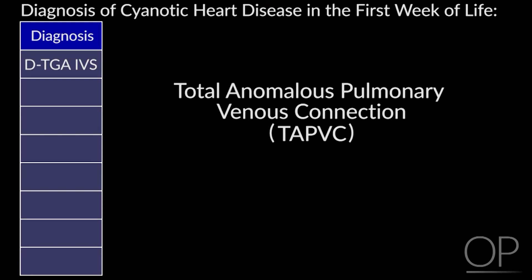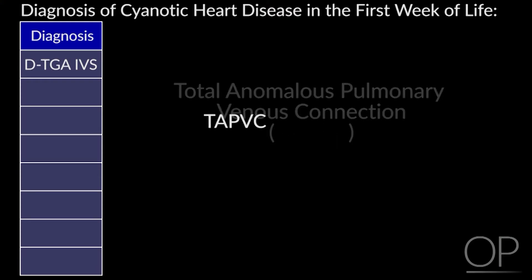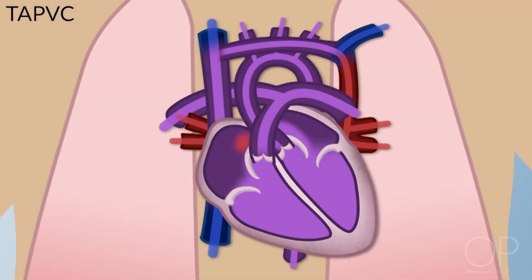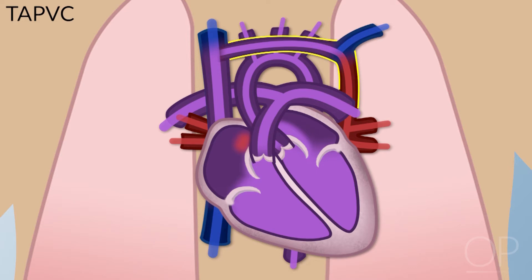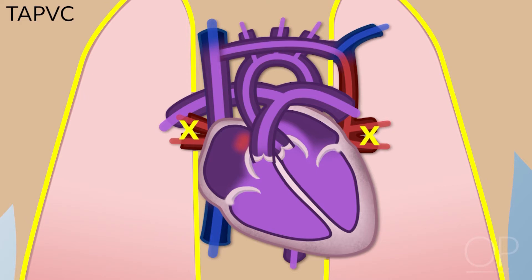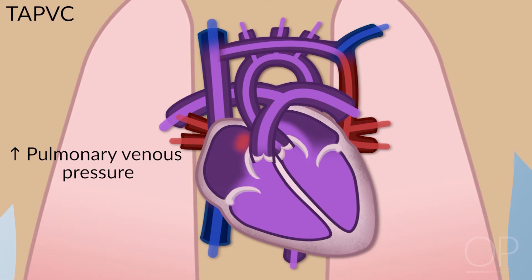The second is total anomalous pulmonary venous connection. These are kids whose pulmonary veins never get back to the left atrium, so they do okay in utero because there is usually some connection from the common pulmonary vein behind the heart to the right superior vena cava, left superior vena cava, or umbilical vitelline system. When they're born, all of a sudden they can't get blood out of the lungs. The blood backs up into the lungs, they get very high pulmonary venous pressure and go into pulmonary edema.